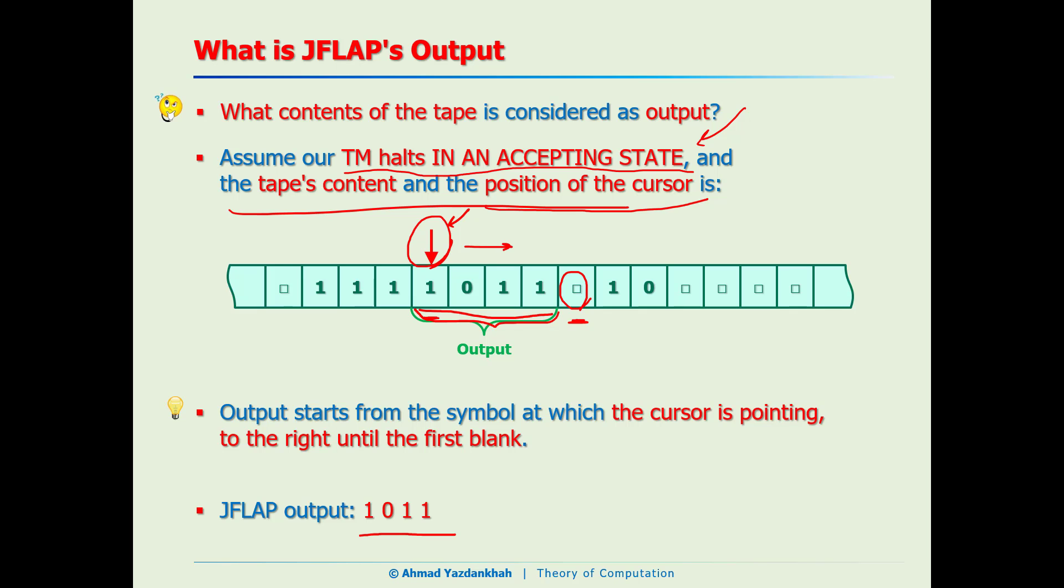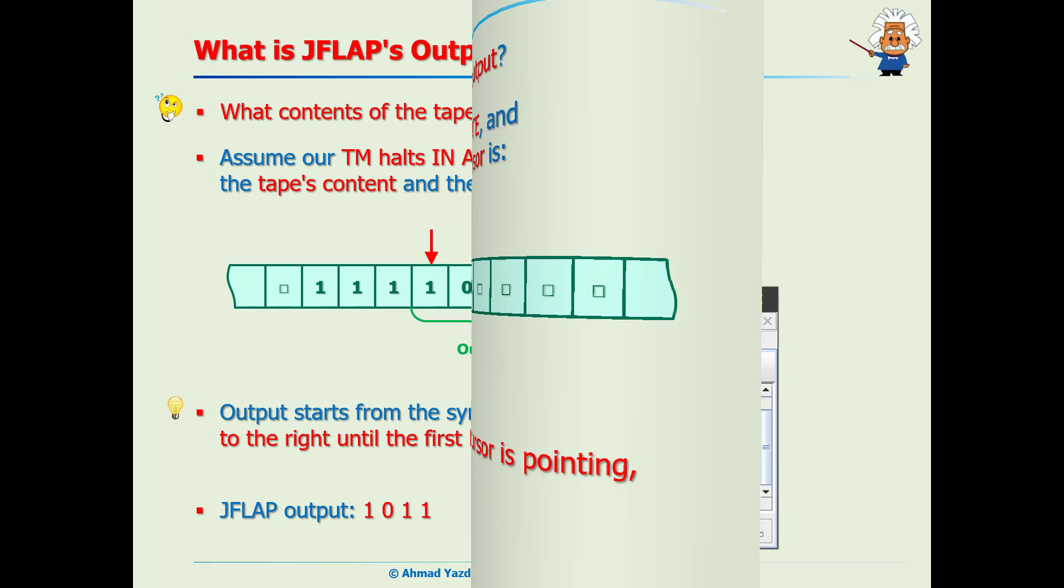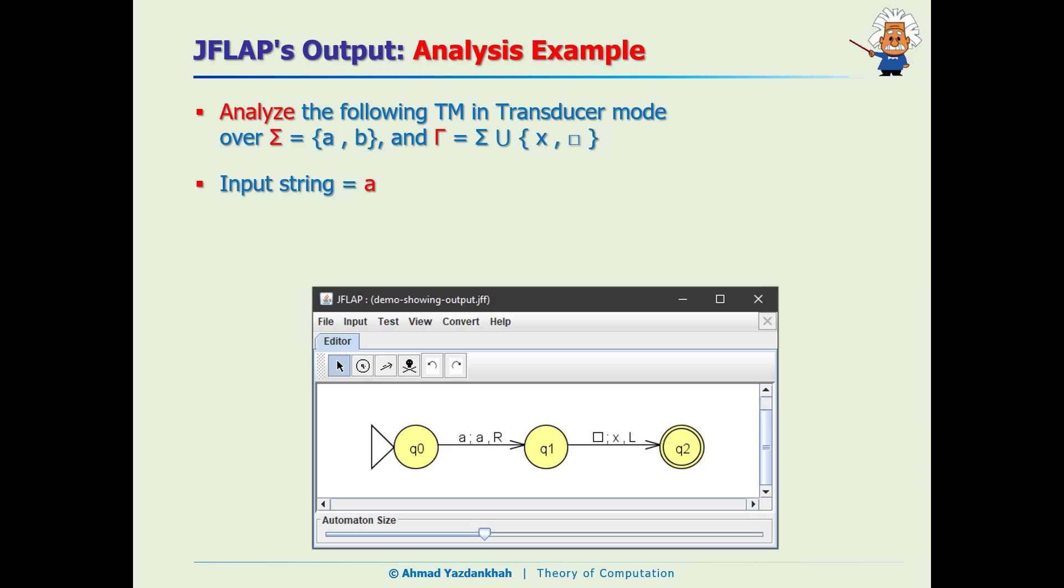To complete our understanding about the output let me give you two examples, one analysis and one design. So this is a simple Turing machine. We want to input the 'a' as the input string and analyze what would happen. Let me create a tape like this. When we run the machine the cursor is pointing to the 'a'. Now what would happen here? It says that if it is 'a', don't change it, go to the right.